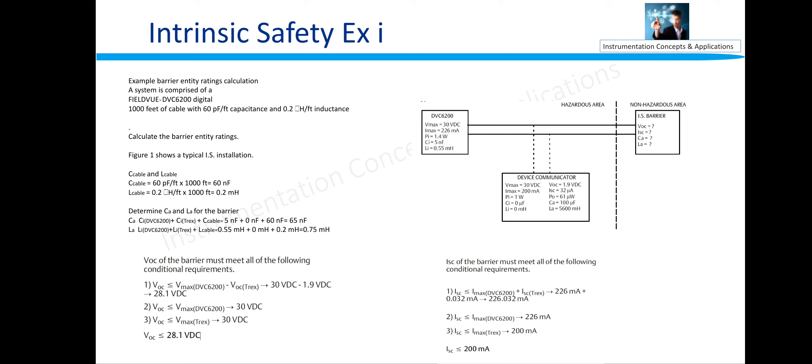If we are going to calculate the open circuit voltage, that should be less than Vmax of DVC minus VOC of the Trex, that is 30 VDC minus 1.9 VDC, that should be 28.1 VDC. And other conditions for calculating the VOC of the barrier must meet all the following conditions requirement. VOC should be less than Vmax of Trex also. So VOC is 28.1.